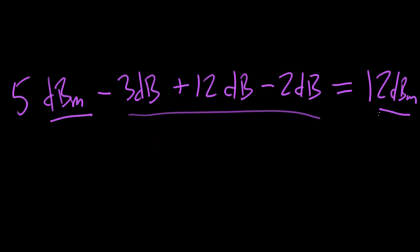You don't have to absolutely master decibels for this course, but it helps to be comfortable. The key things to know: a decibel is a unit of ratio, adding decibels means multiplying ratios, 3 dB is a ratio of 2 to 1, and 10 dB is a ratio of 10 to 1. With just those rules, you can actually compute any whole-number decibel value in your head.